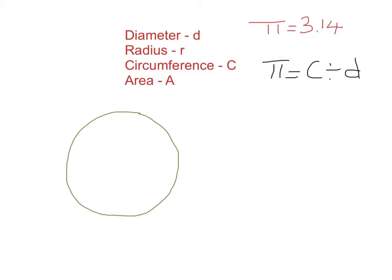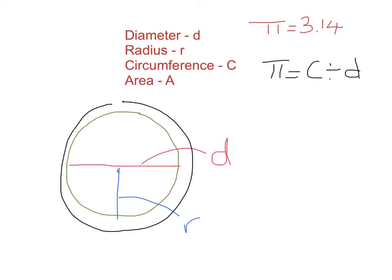Pi is an ongoing number; we only use the first two digits to express it. Now I'm going to show you on our circle where each of these lines are. The diameter goes from one end of the circle, cutting through the center, to the other end. The radius goes from the center to one end — just halfway across. Circumference refers to the distance all the way around, similar to the perimeter of a circle. And area is the space in between — all of the space inside the circle.